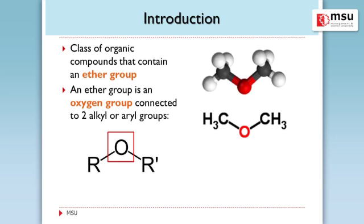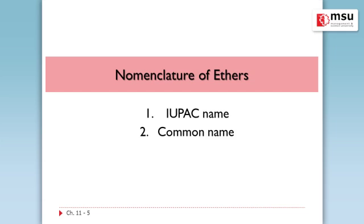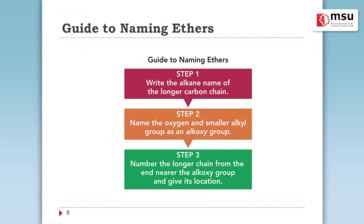So how do we name ethers? The naming can be the IUPAC name or the common name. The guide to naming an ether: Step one, write the alkane name of the longer carbon chain. Step two, name the oxygen and the smaller alkyl group as an alkoxy group. Step three, name the number of the longer chain from the end nearer to the alkoxy group and give its location. This is the guideline for us to know more about ethers.